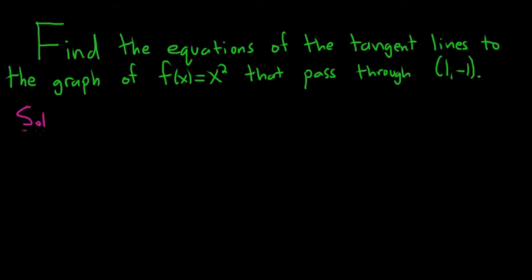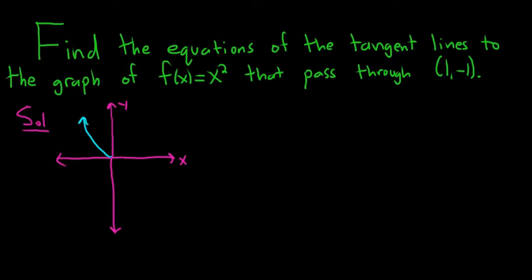So solution. In problems like this, the first thing you usually do is you draw a picture. A picture usually helps you figure out the problem. So there's the x-axis, there's the y-axis. And let's draw the graph of x squared — maybe x squared looks something like that. So that's the graph of y equals x squared. And the tangent lines pass through the point 1, negative 1. Maybe one of our tangent lines would look something like this, and then the other tangent line maybe would look something like this.